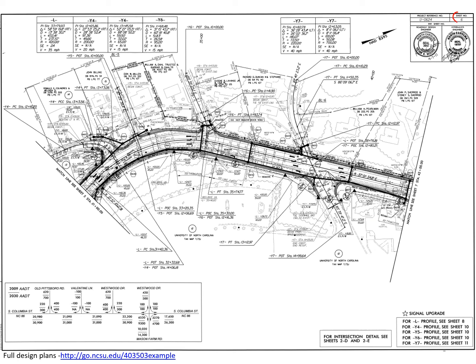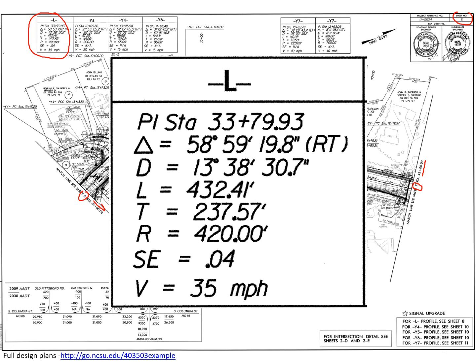Moving to sheet six, tying into sheet five which ended at station 31, and tying into sheet seven on the next page at station 42. This page has one horizontal curve along the L line with similar characteristics to what we've seen before. If we had continued through the table with calculations, we would be more familiar with these numbers — they are from the overall table used to solve the problem.